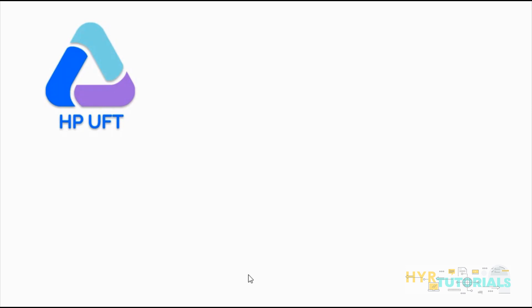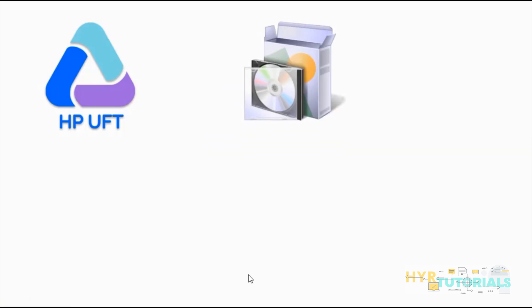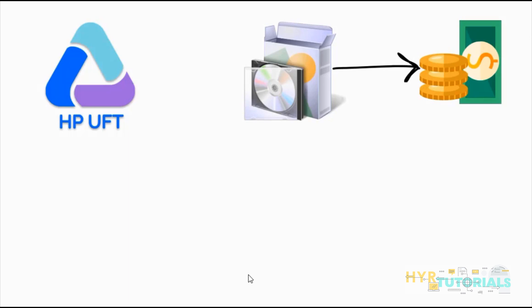First one is HP UFT. UFT means Unified Functional Testing. It is formerly known as Quick Test Professional, QTP. This software was developed by HP — Hewlett Packard Company — and it provides functional and regression test automation for software applications. This software is a licensed version; it is not open source, so to use this software we have to pay.